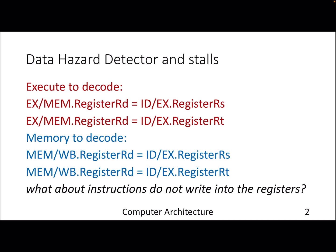When we need to stall a pipeline, we need a detector which can actually detect whether a data hazard is happening or there's a possibility. You need this detector mostly at the decode stage — that's where you actually read the registers. A simple data hazard detector will check whether the register you are writing back is the same as one of the source registers.